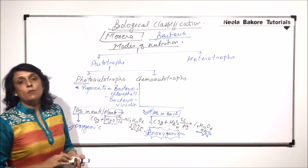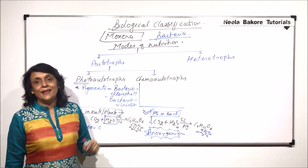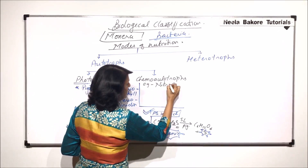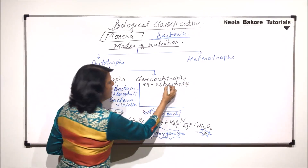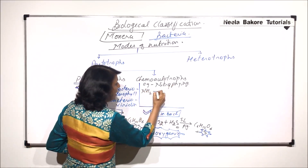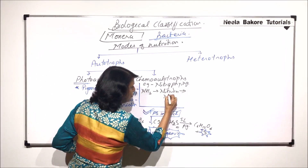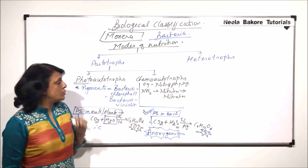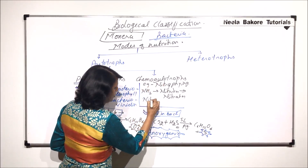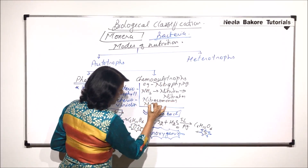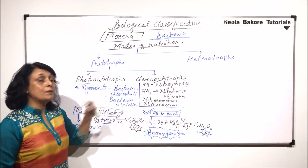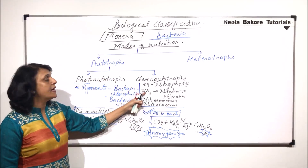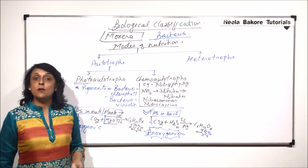Now let us come to chemoautotrophs. Chemoautotrophs use some kind of chemicals to obtain their nourishment. The examples here are nitrifying bacteria. These nitrifying bacteria convert ammonia into nitrites and then into nitrates, and during this process they produce energy which they use. Examples of nitrifying bacteria are Nitrosomonas and Nitrococcus. Iron bacteria can also be taken as an example of chemoautotrophs — they synthesize their own food using chemicals, not solar energy.